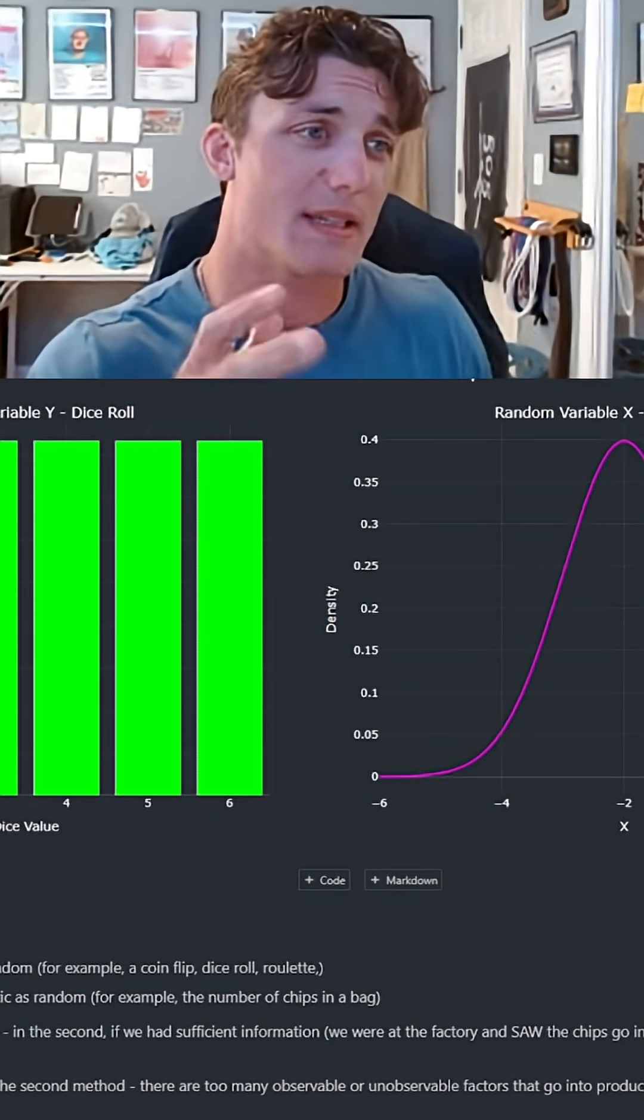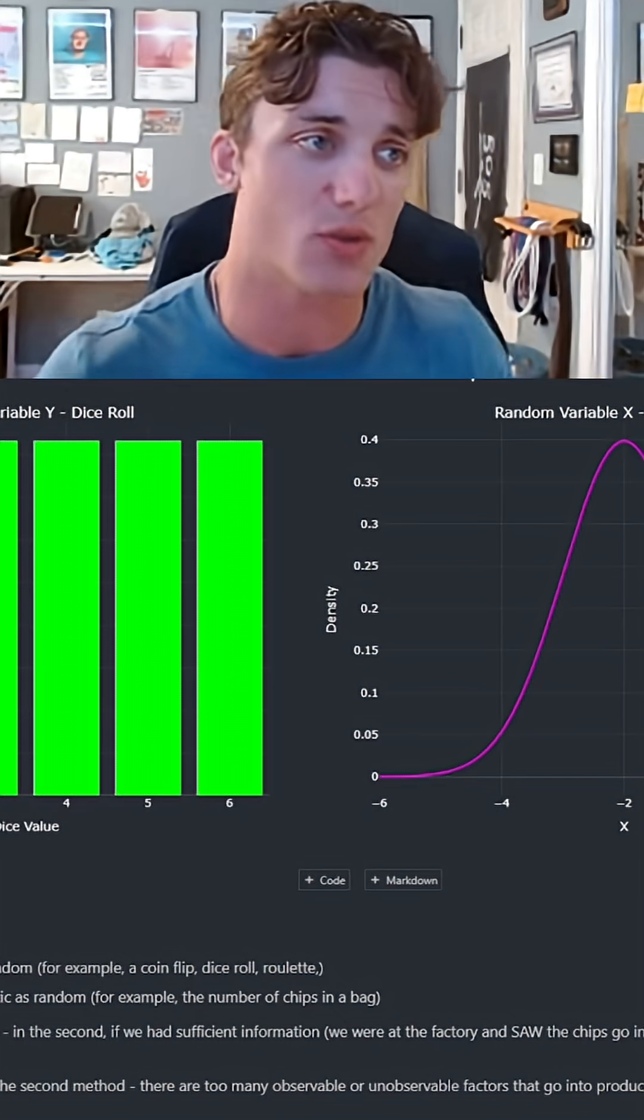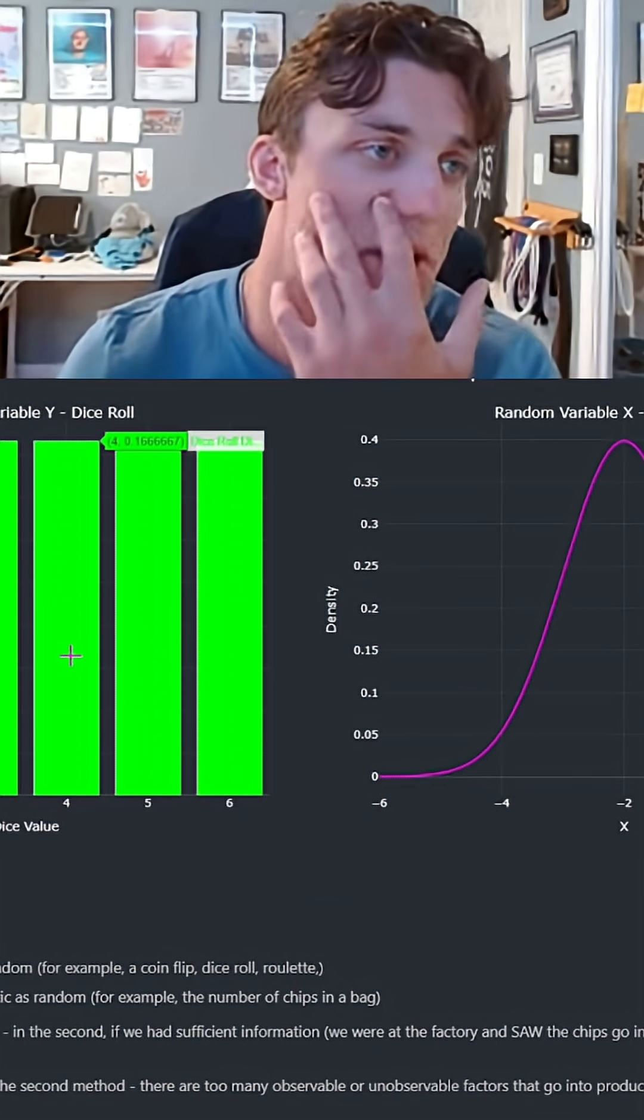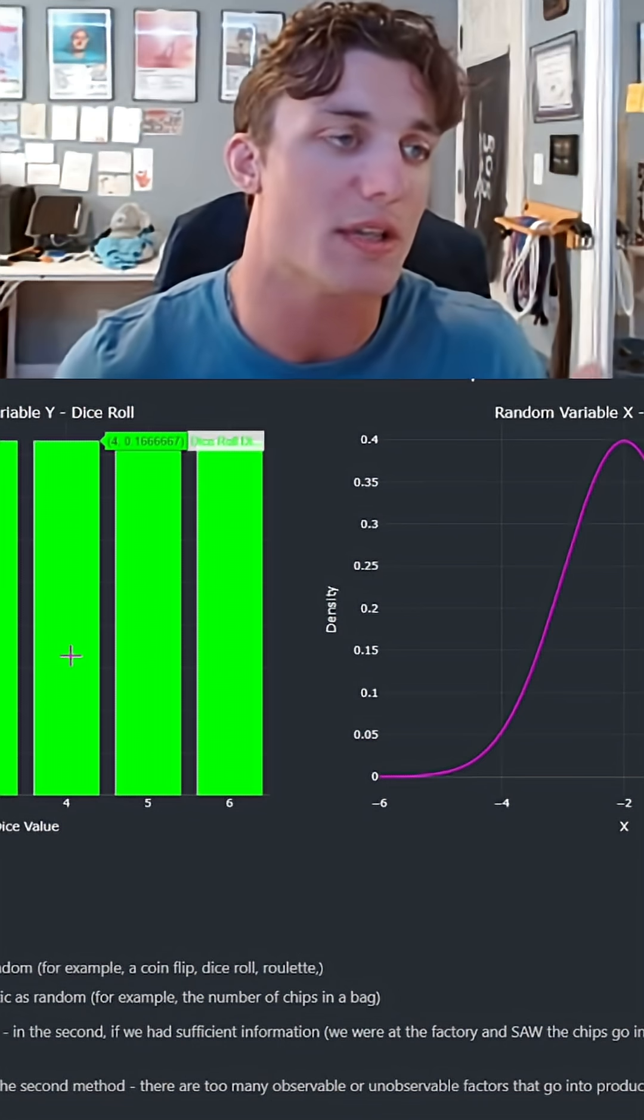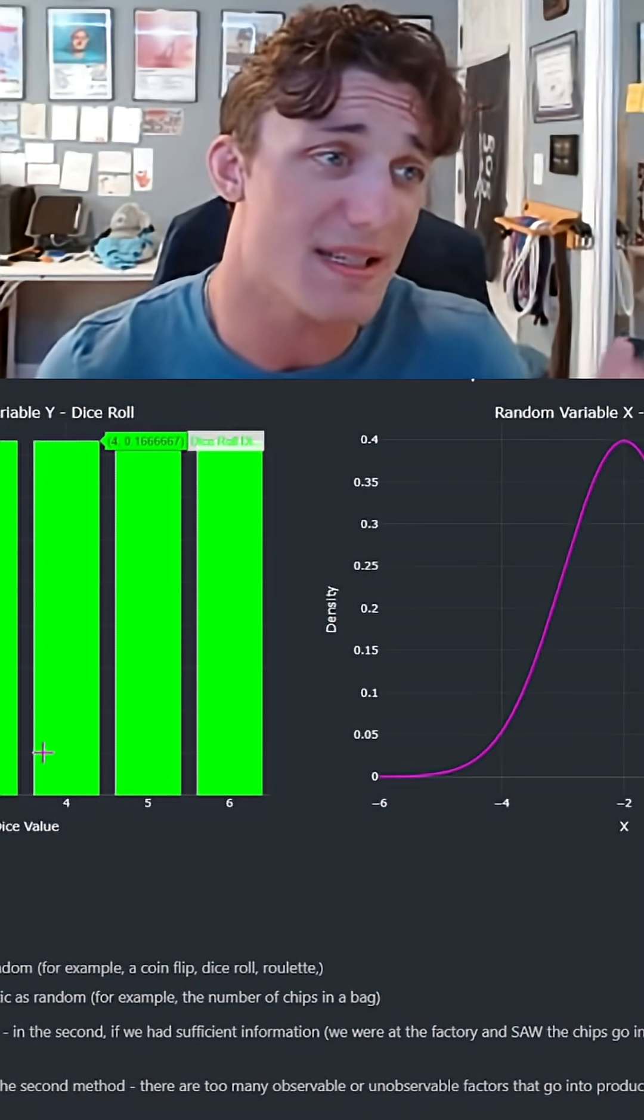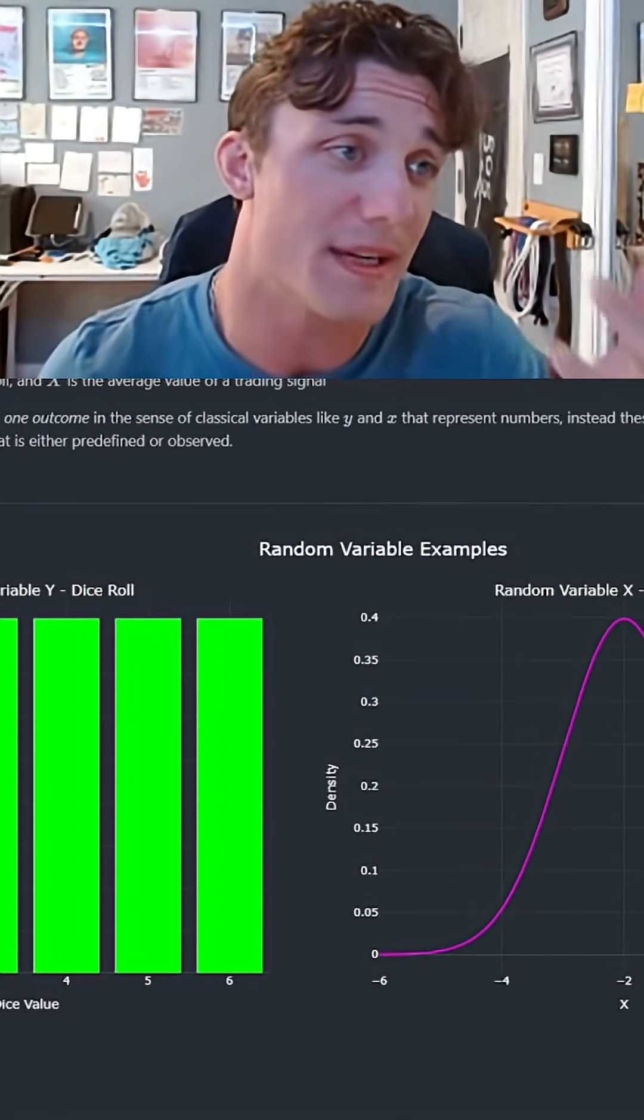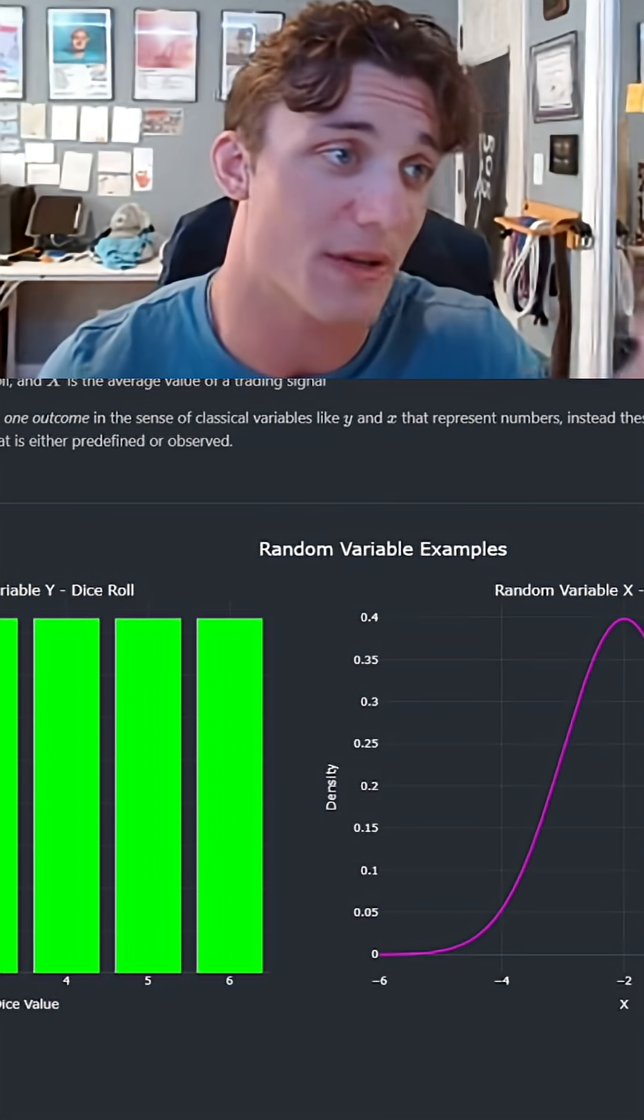When we roll a dice, we're dealing with independent draws from the same distribution where no amount of conditioning on any information is going to change the distribution. But this is not true when we're dealing with a random variable or treating something like a random variable, like a trading signal.